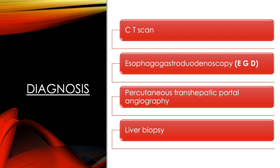Diagnosis of cirrhosis can be made via CT scan, EGD (esophagogastroduodenoscopy) — a scope that looks through the esophagus to the stomach to the duodenum — percutaneous transhepatic portal angiography which examines the portal vein, and liver biopsy. A liver biopsy involves cutting a piece of liver tissue for examination and is optimal for identifying disease.